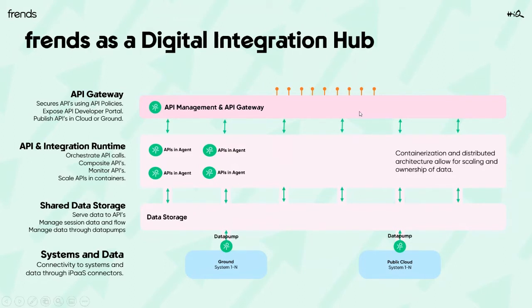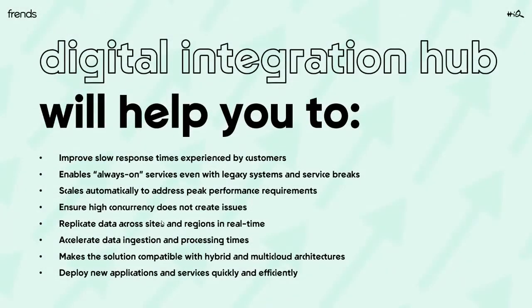Instead of tackling that problem in other ways, we create a simple layered architecture where each component — the integration and API runtimes — can be containerized, distributed, and scaled up and down freely. The data storage should also be containerizable, distributable, and shareable across different execution endpoints. This architecture helps in many cases where customers have bad experiences with APIs, and the ideology is quite similar to using some sort of cached component or API caching.